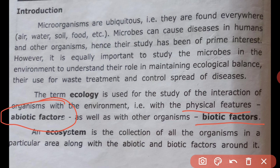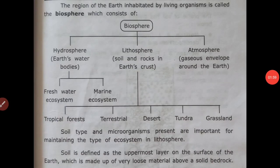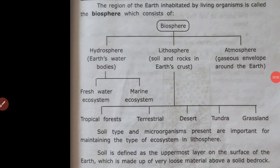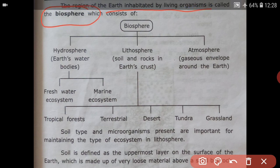An ecosystem is the collection of whole organisms in a particular area along with the abiotic and biotic factors around the ecosystem. The region of the earth inhabited by living organisms is called the biosphere.